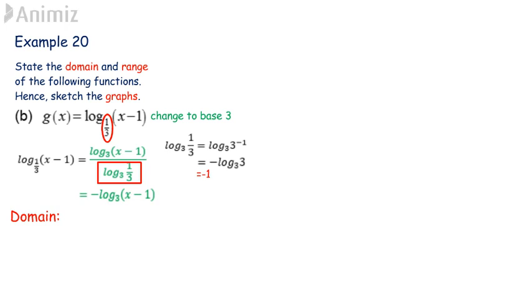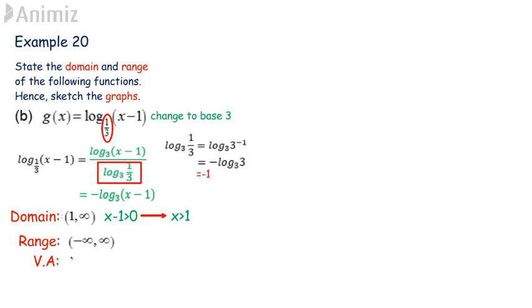The domain: g is only defined if x minus 1 is greater than 0, which implies x is greater than 1. So the domain is all real numbers greater than 1. The range is from negative infinity to positive infinity for all logarithmic functions. The vertical asymptote is x equals 1, since x is greater than 1. Choosing x equals 2: log base 3 of (2 minus 1) equals log base 3 of 1, which equals 0, so the graph passes through the point (2, 0).